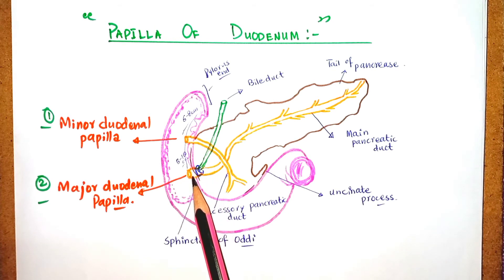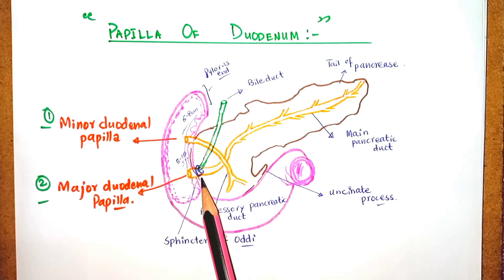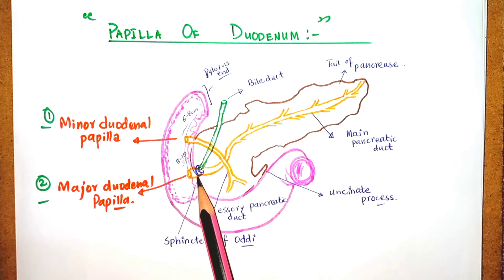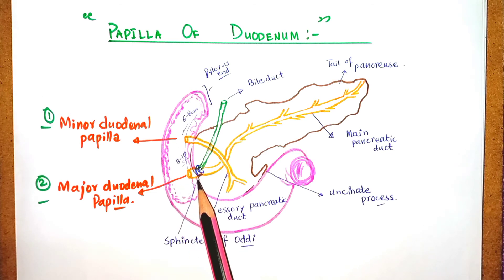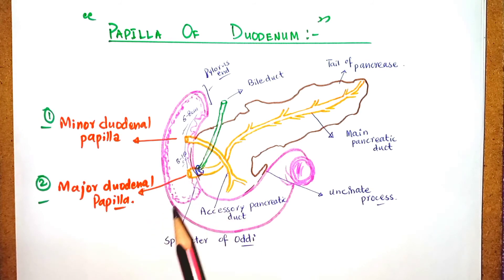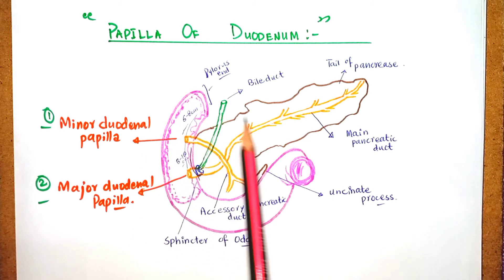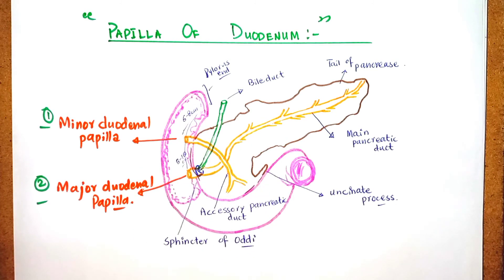At the junction of the bile duct and the pancreatic duct there is the sphincter of Oddi. The sphincter of Oddi controls the flow of bile and pancreatic juice into the duodenum and prevents reflux of duodenal contents into the bile and pancreatic ducts. These are some special features of the papilla of the duodenum. Thank you very much.